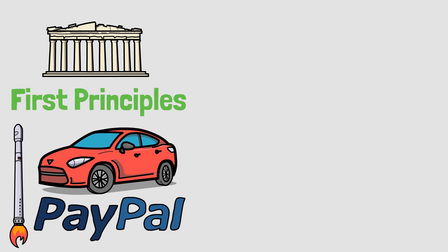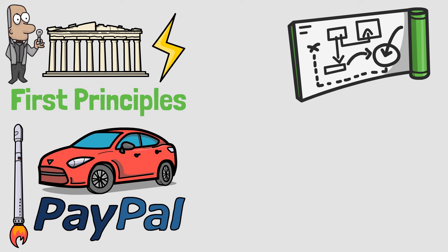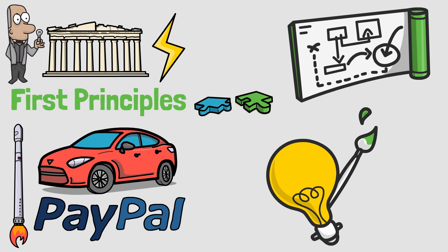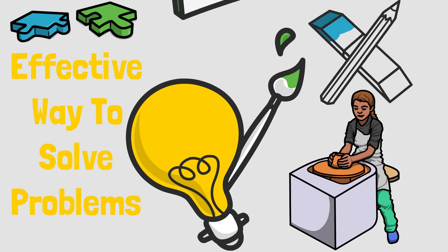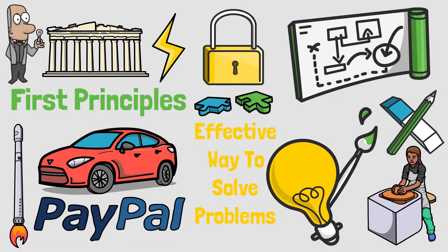Just like him, Aristotle, Thomas Edison, and Nikola Tesla all used this strategy for solving difficult problems and creating outstanding innovation. First principles thinking is one of the most effective ways to solve problems. Today I show you how you can use this technique to unlock your creative potential.